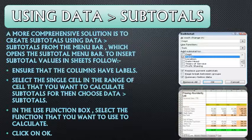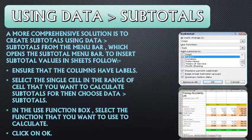दूसरा method subtotals का है using data tab. तो data tab में से हम subtotal choose करेंगे, तो again we will get the same subtotal tool जो हमें पहले मिला था. उसमें हम लोग function choose कर सकते हैं — sum function — कौन से column की हमने subtotal निकालना है उस column को choose करेंगे, और ok करेंगे. So we will get the answer.